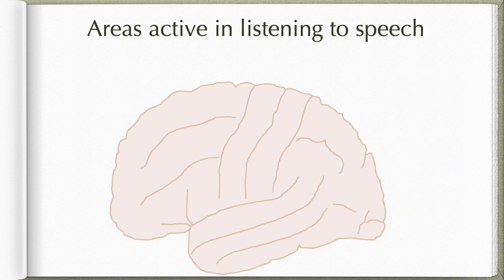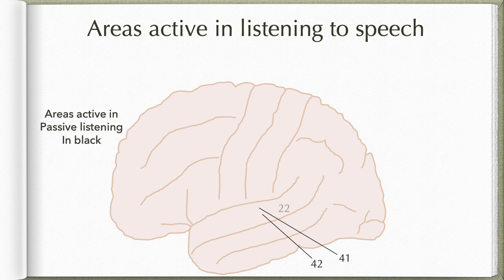I will be showing you the various areas which are active when you are passively listening: area 41 and 42, which are the primary auditory area and auditory association area; area 22, which is the higher association area for the auditory pathway; and area 9, which is the supervisory attention system. Whenever we are awake and alert and doing something — whether it is hearing, talking, or reading — area 9 becomes active. These are the areas active when you are listening to speech passively.